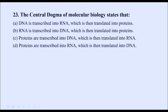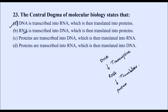The central dogma of molecular biology states that DNA is transcribed into RNA, which is then translated into protein. This process from DNA to RNA is called transcription, and from RNA to protein is called translation. The correct option is A — DNA is transcribed into RNA, which is then translated into protein.